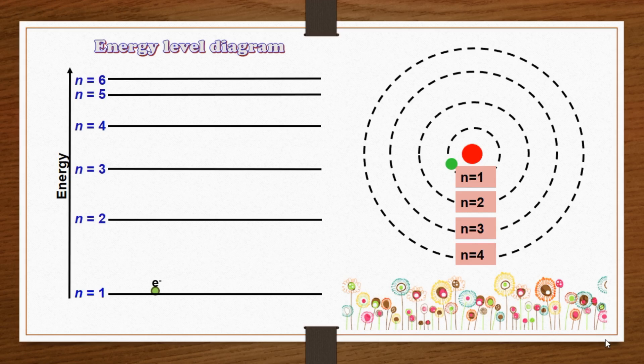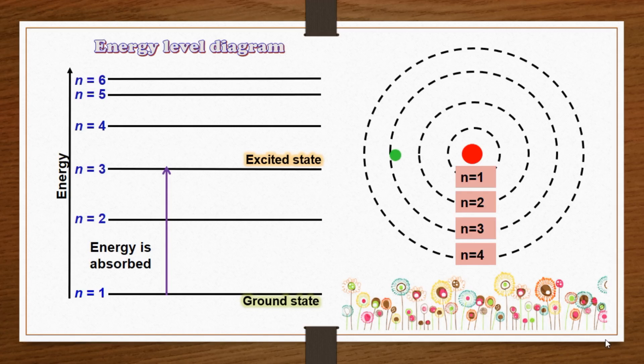Bohr's theory enables us to explain the line spectrum of the hydrogen atom. Radiant energy absorbed by the atom causes the electron to move from a lower energy level to a higher energy level. Conversely, radiant energy in the form of a photon is emitted when the electron moves from a higher energy level to a lower energy level.